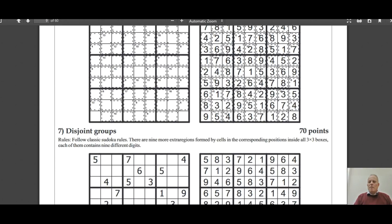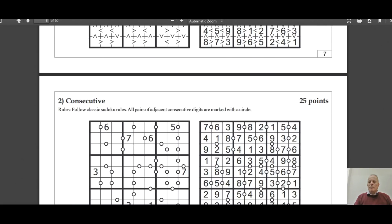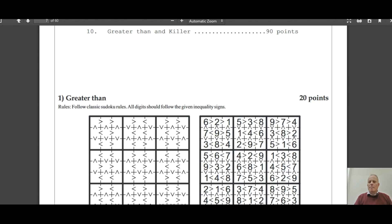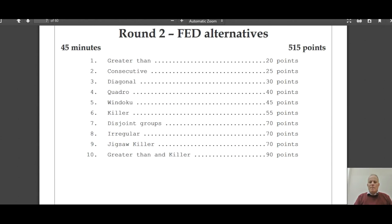Let's just assess for that round. There's a total of 515 points in 45 minutes. So if you were thinking you might solve them all, you'd be expecting to achieve about 12 points a minute, and that would require you to solve, say, the consecutive puzzle in two minutes. So it's really a tough ask to expect anybody to complete that set.